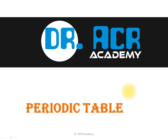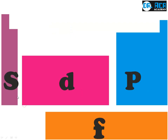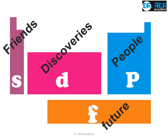The topic of this video is to learn the periodic table. These are the blocks of the periodic table: S block, D block, P block, and F block. The stories related to S block are about friends, D block about discoveries, P block about people, and F block about the future.